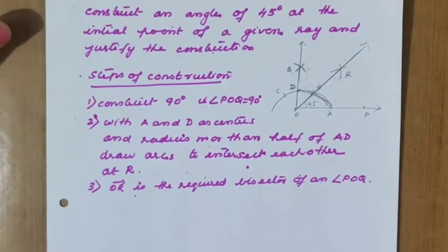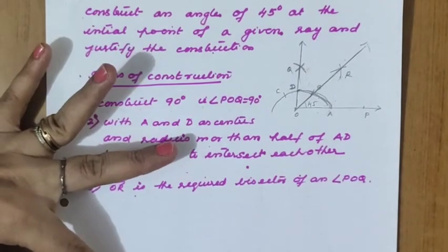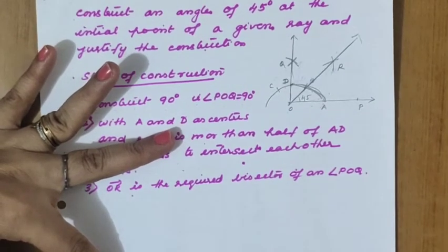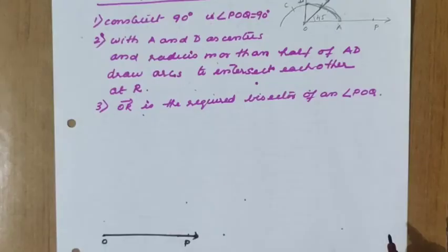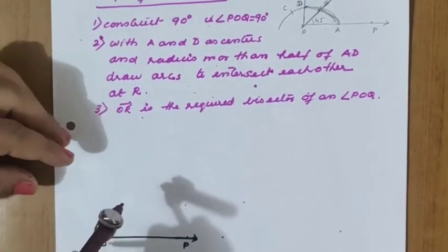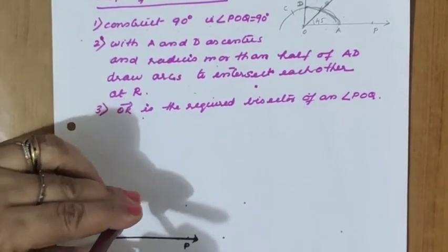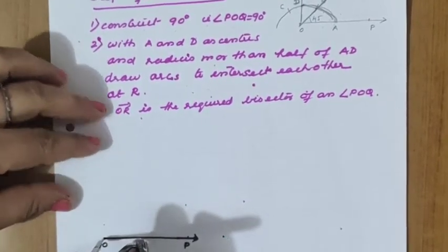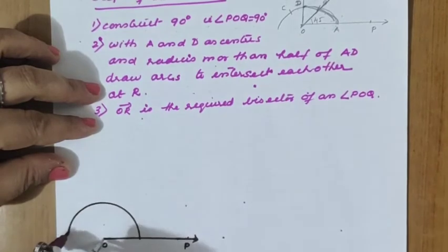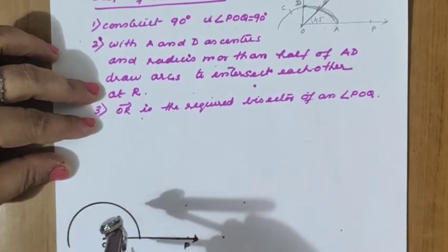Now we will see the actual construction steps. The first step is to perform the 90 degree construction. For that, we draw ray OP first. With O as center and a convenient radius, we draw an arc. If you watched the last class, you already know these steps.